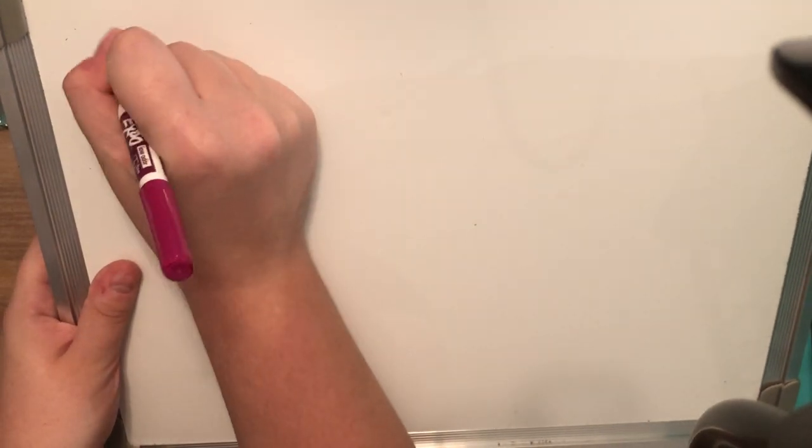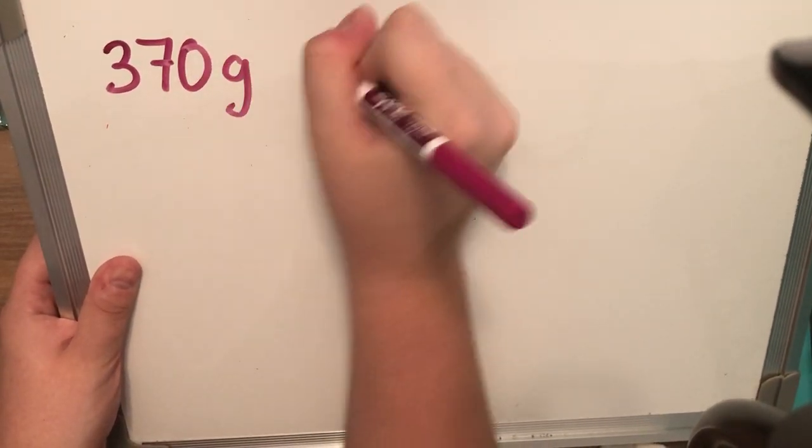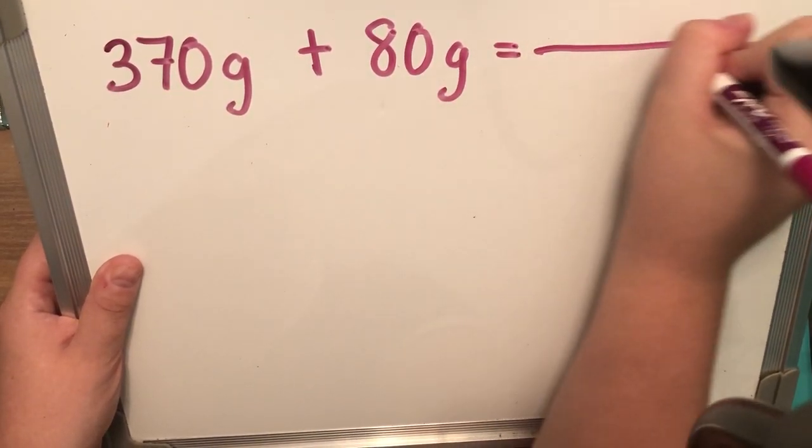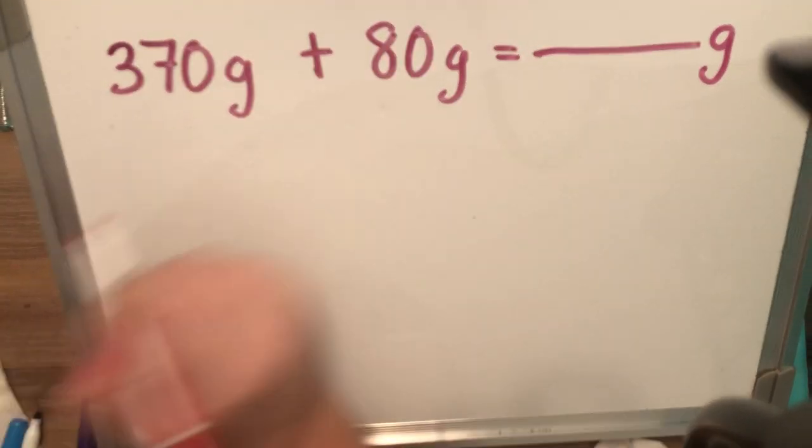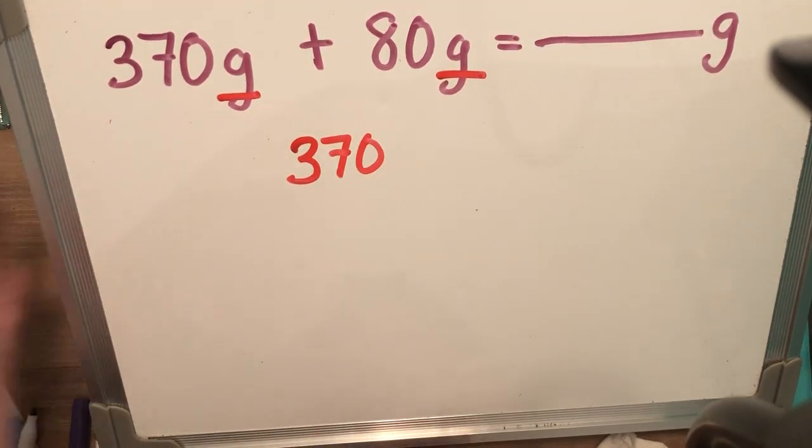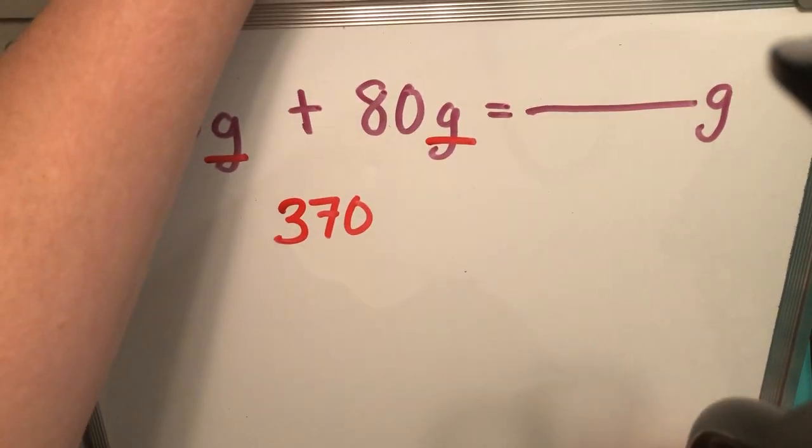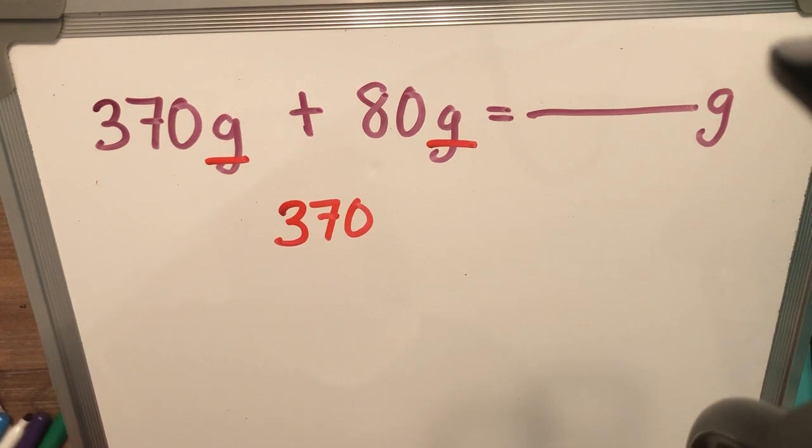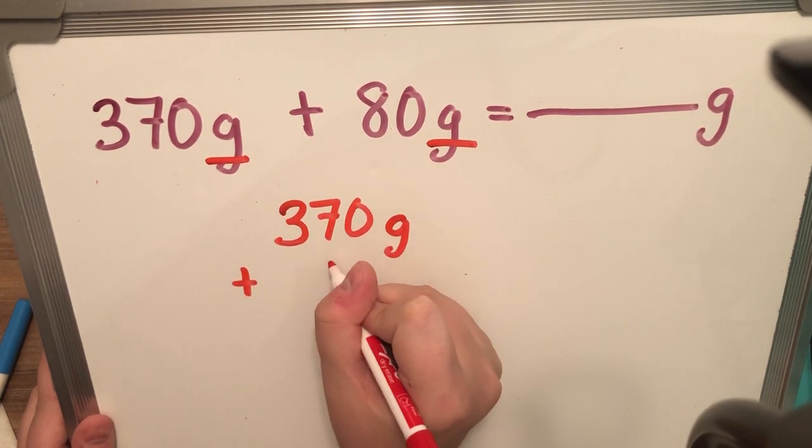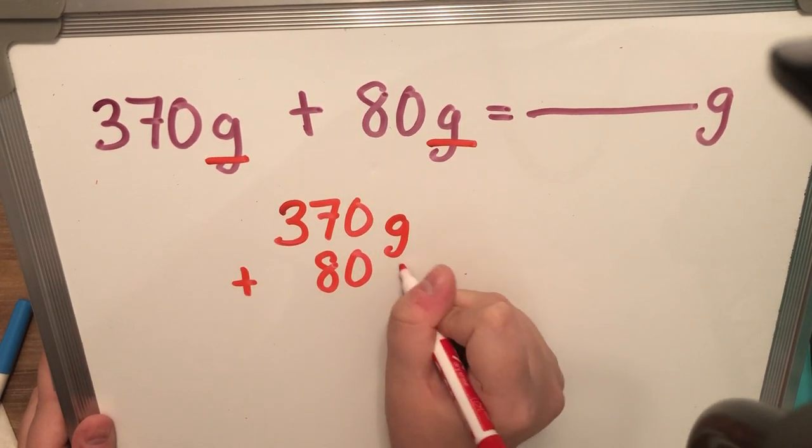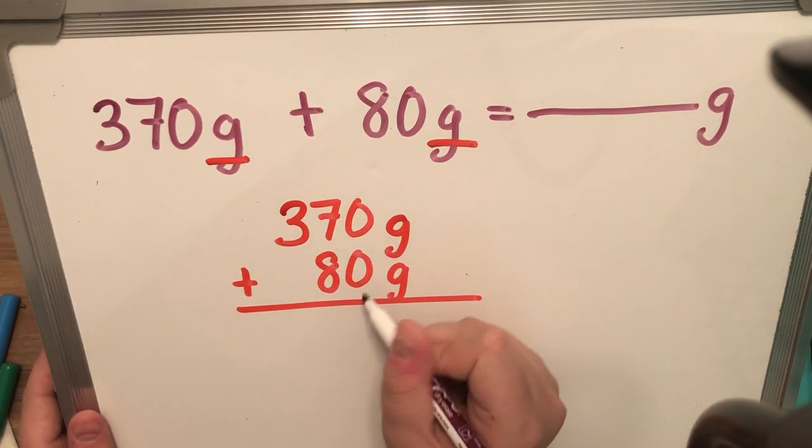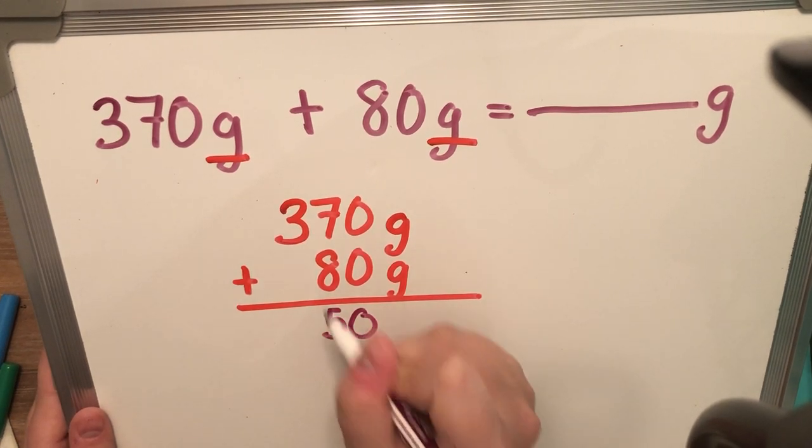So, I have 370 grams. And I'm going to add an additional 80 grams to that. And we're going to figure out how many grams in total it is. So, I'm going to line up my problem. And because I have two like units, I don't need to do any conversions. I don't need to change anything. Because they are like, I can just go ahead and add straight across. Make sure you're putting your labels down. Because it's important for you to remember what you're talking about. 0 plus 0 is 0.